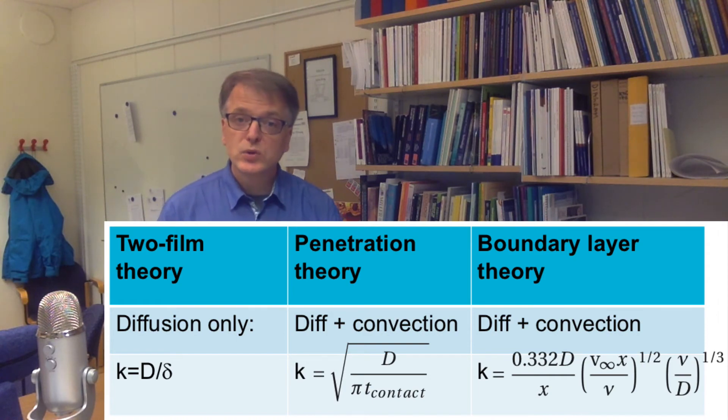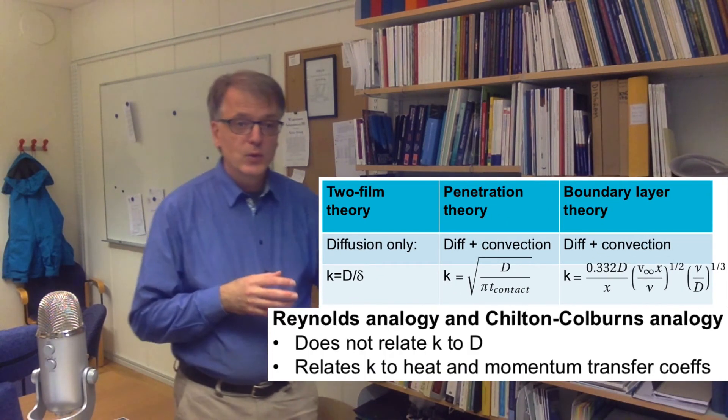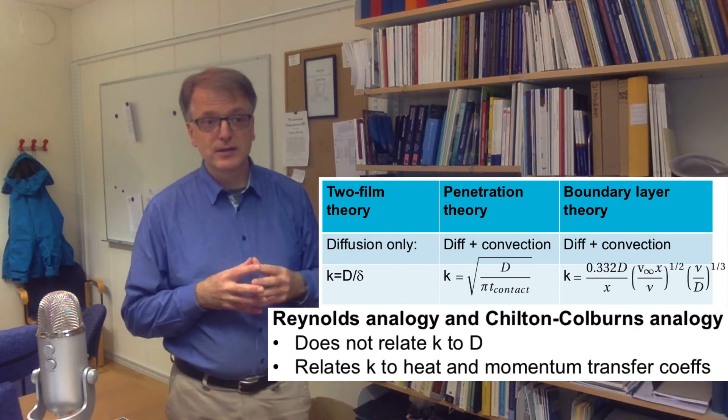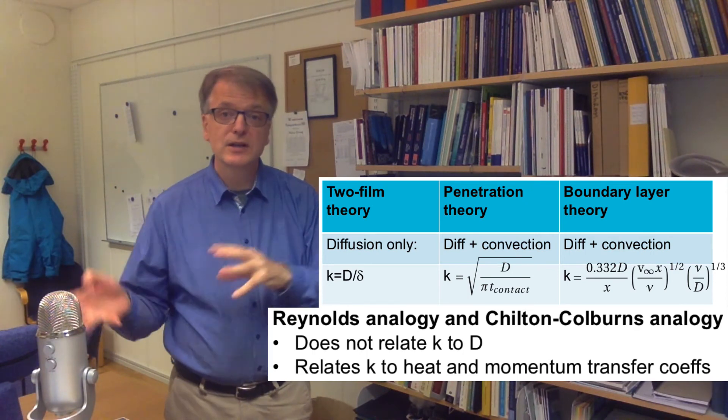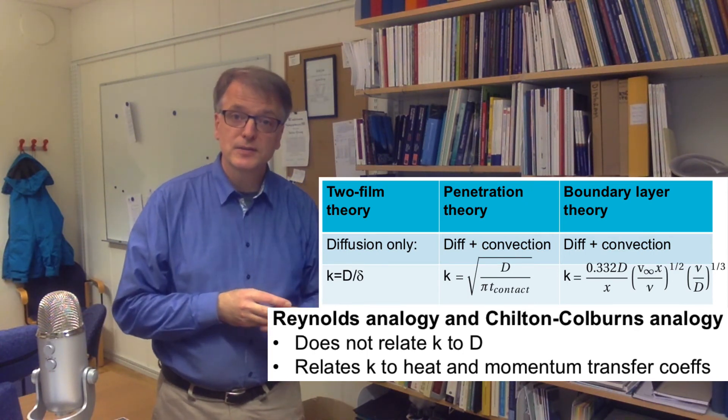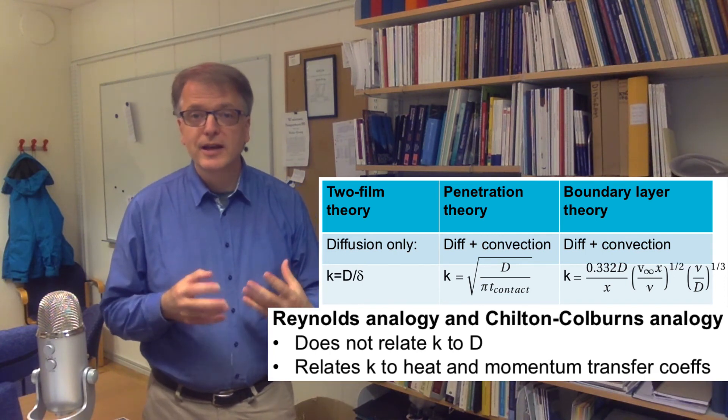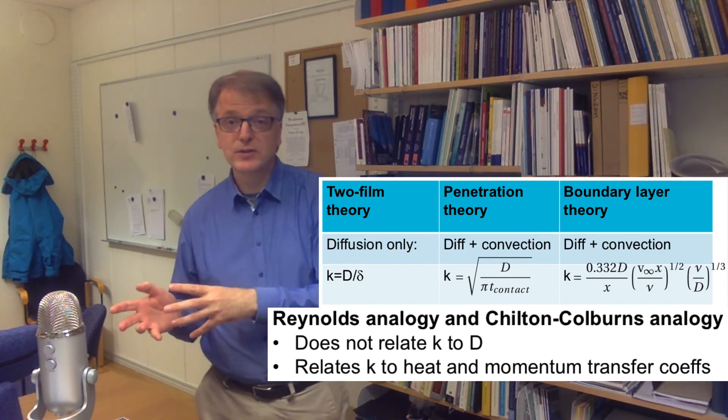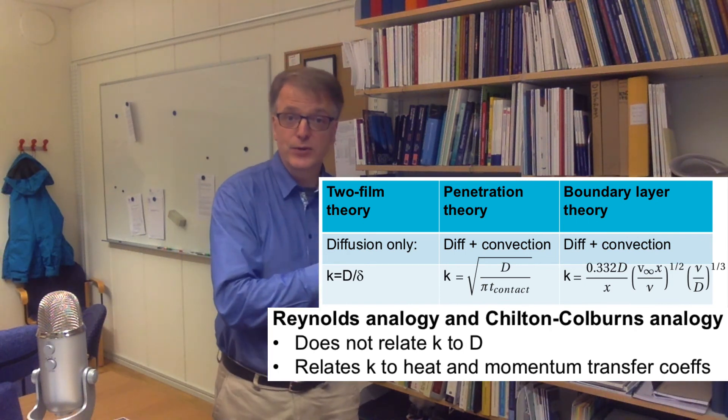Later we will also talk about Reynolds analogy and Chilton-Colburn analogy. While these three theories—two-film theory, penetration theory, and boundary layer theory—relate the diffusivity to the mass transfer coefficient, Reynolds analogy and Chilton-Colburn analogy instead relate a mass transfer coefficient to the momentum transfer coefficient and the heat transfer coefficient.